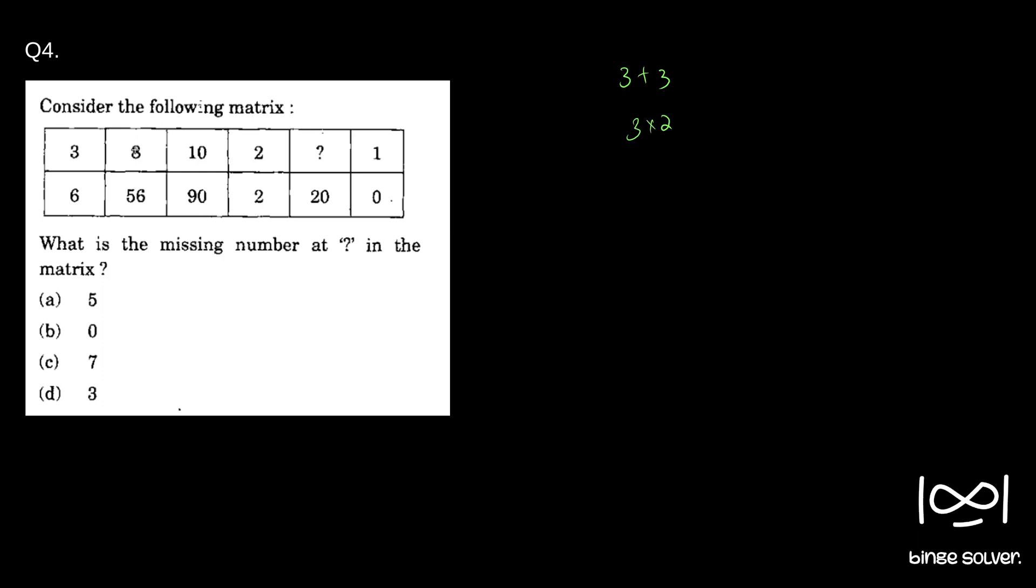And the moment you come to the next element, you can see 8 plus something - it is difficult for that plus to come here. So 8 into something is 56. So 8 into 7 is 56.